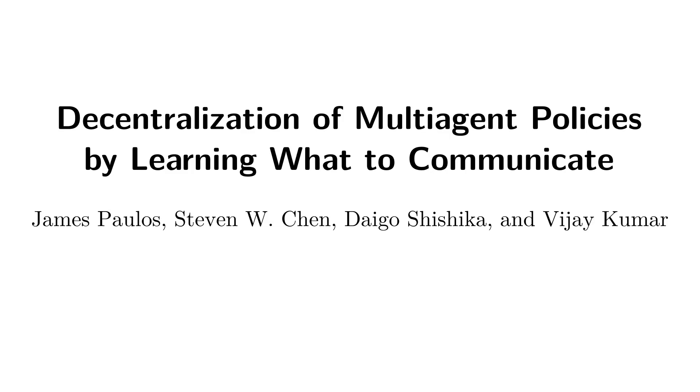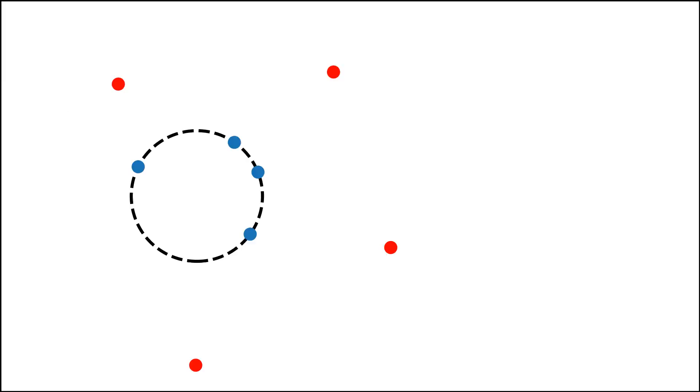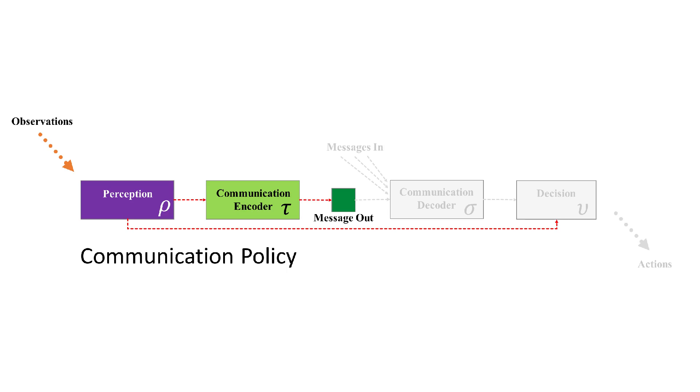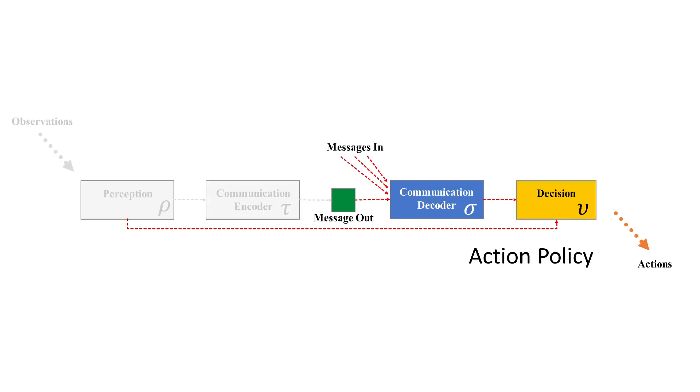Robot teams need effective communication to work together. We pose the problem of decentralizing a centralized policy as a search for both communication and action policies at the level of individual agents.